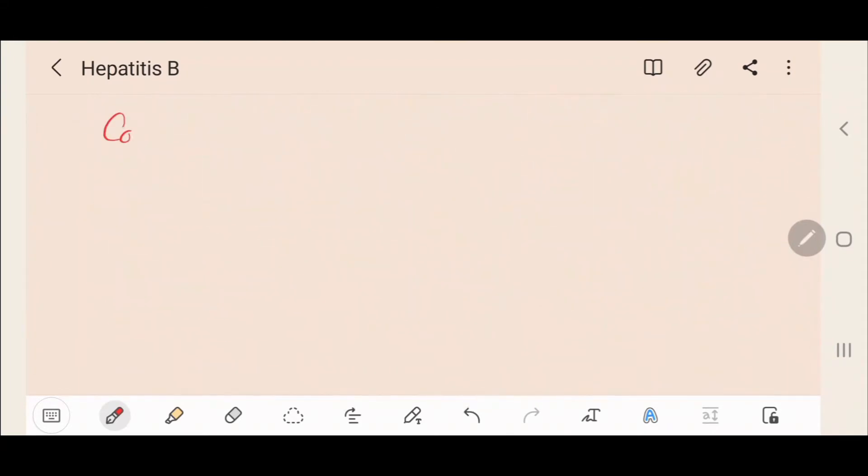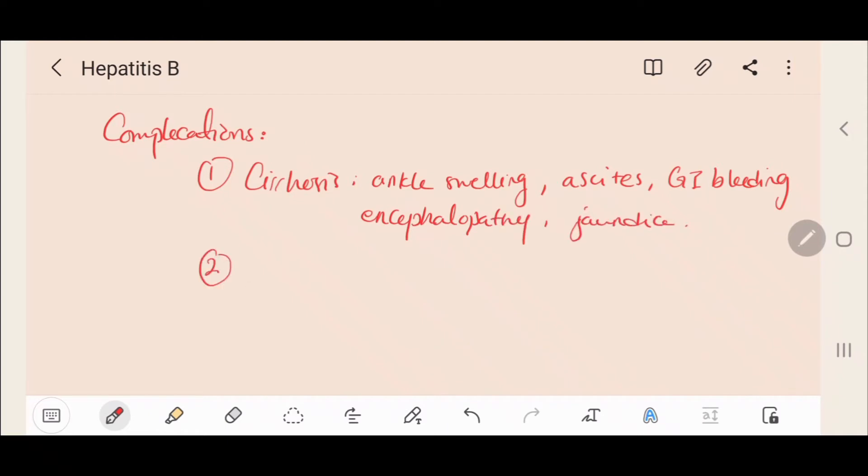As for the complications of Hepatitis B, there can be cirrhosis which manifests in ankle swelling, ascites, GI bleeding, encephalopathy and jaundice. Another serious complication is hepatocellular carcinoma which can present with abdominal mass.